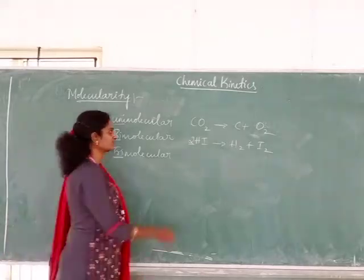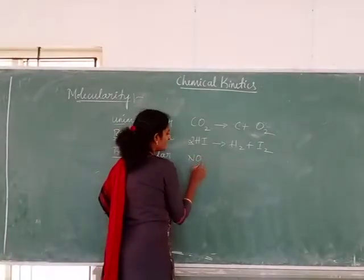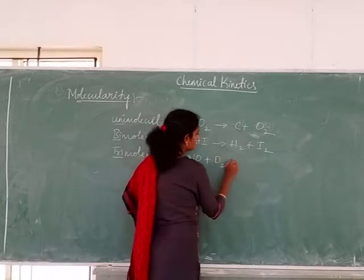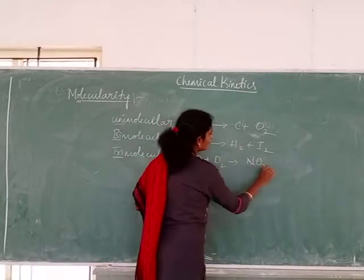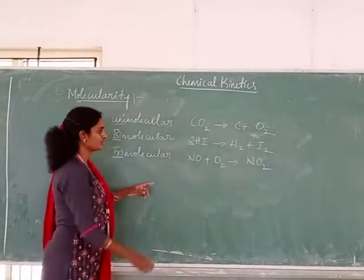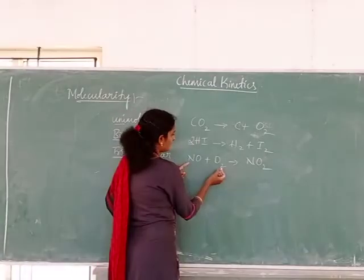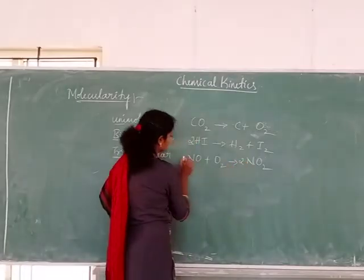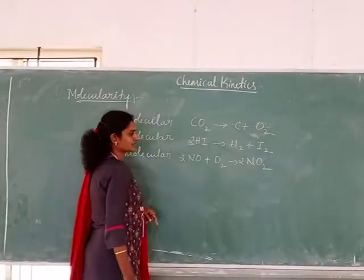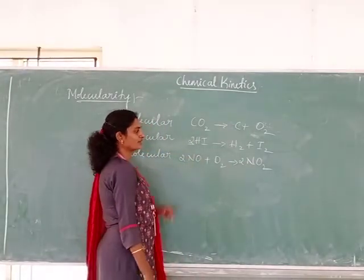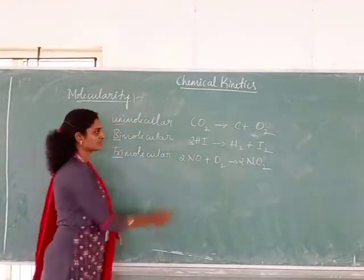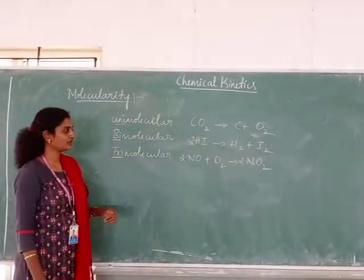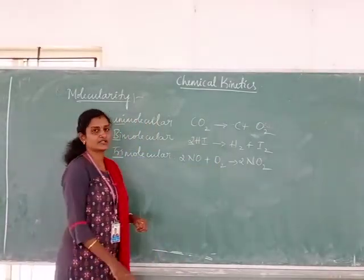For trimolecular reaction, you can take nitric oxide plus oxygen to form NO₂. Here, 2 molecules of NO plus 1 molecule of O₂ — that is 3 molecules total — are involved. Three molecules simultaneously collide in the reaction to produce a new product, so this is a trimolecular reaction.